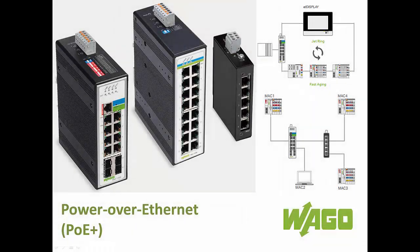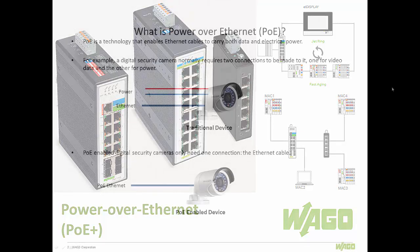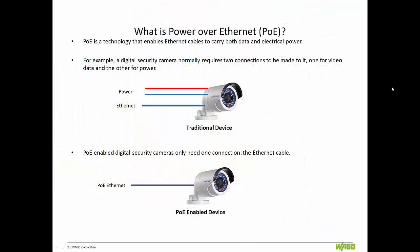Power over Ethernet technology enables ordinary network cables to function as power cords. It is a technology that lets network cables carry electrical power. This allows PoE-capable IP cameras, IoT sensors, or HMI systems to be economically integrated into the network, eliminating the separate installation of power and data cables.